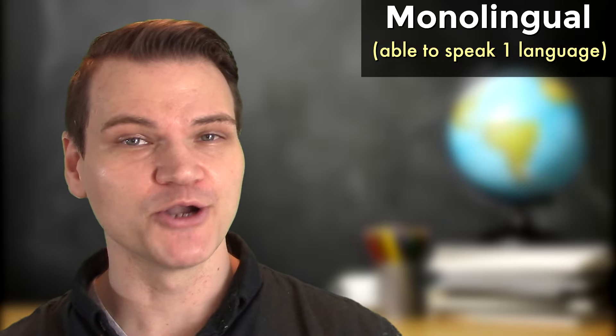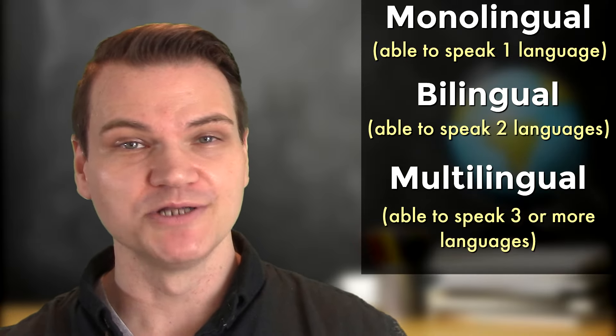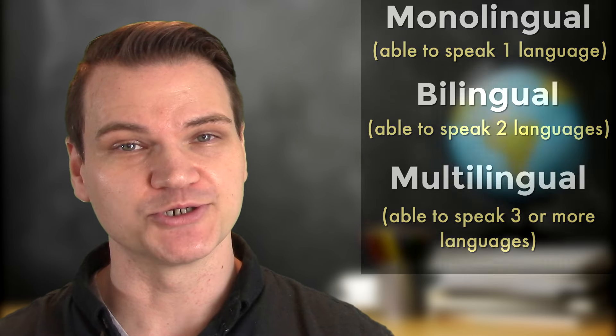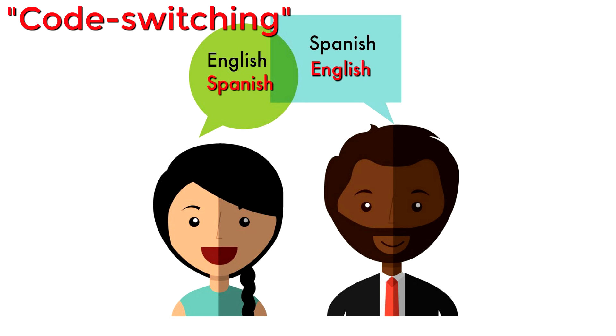Some people are monolingual and speak just one language. Other people are bilingual or multilingual and speak more than one language. Bilingual or multilingual people sometimes switch back and forth between two or more different languages. This is called code switching.